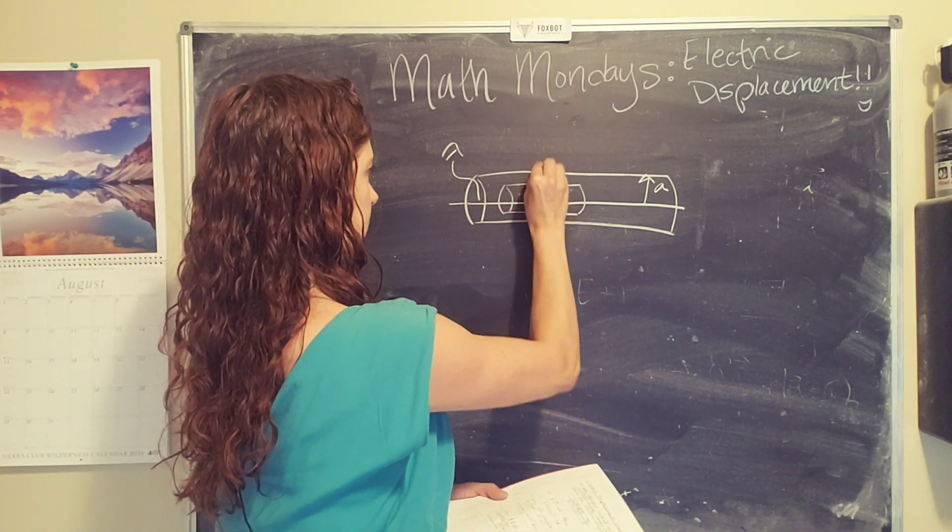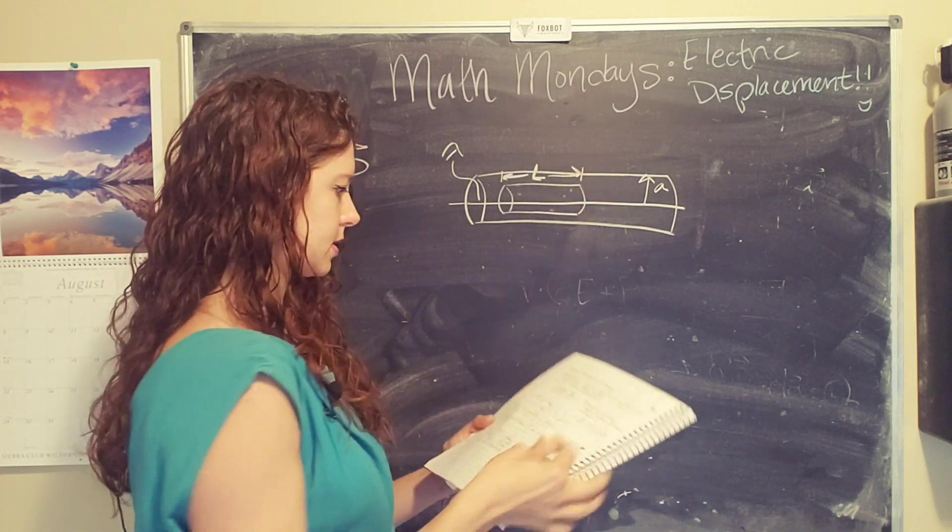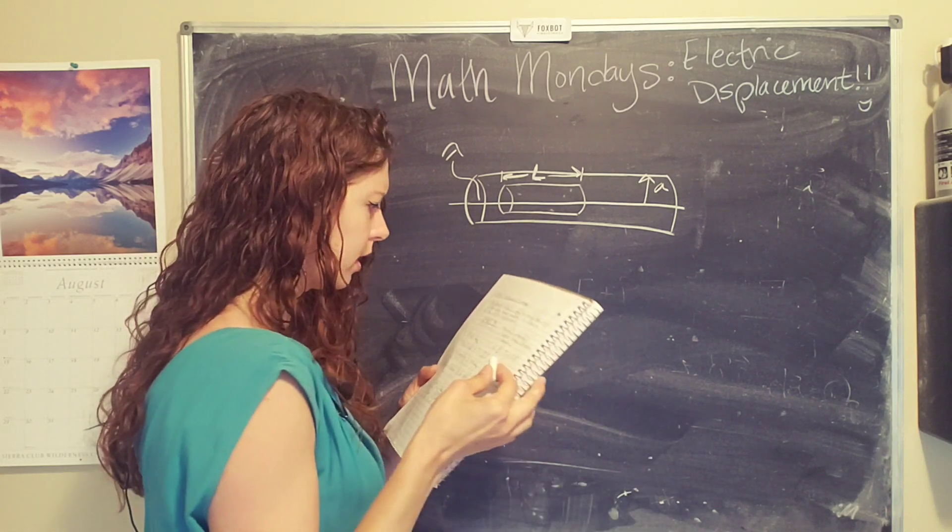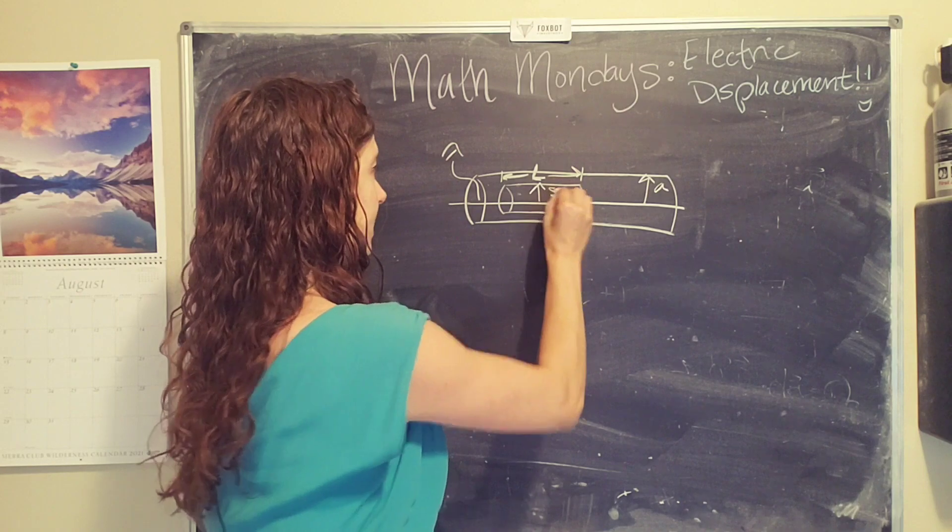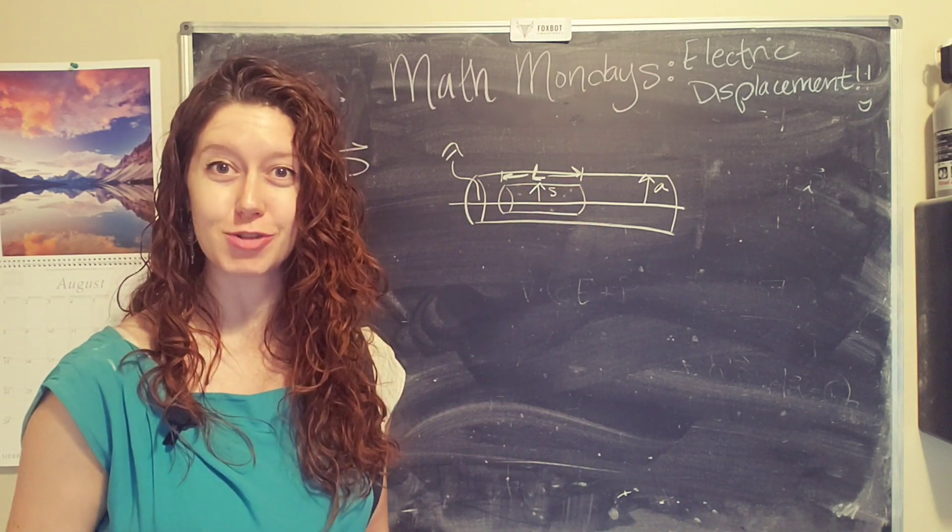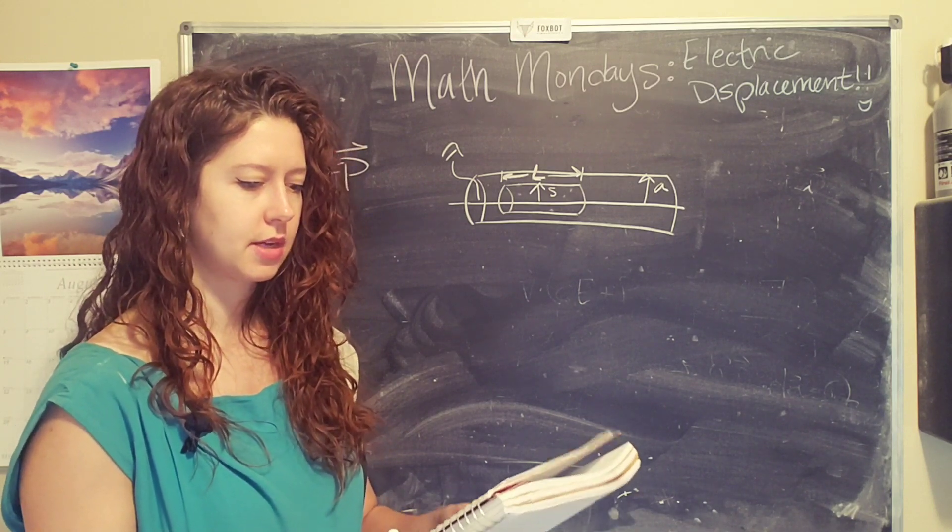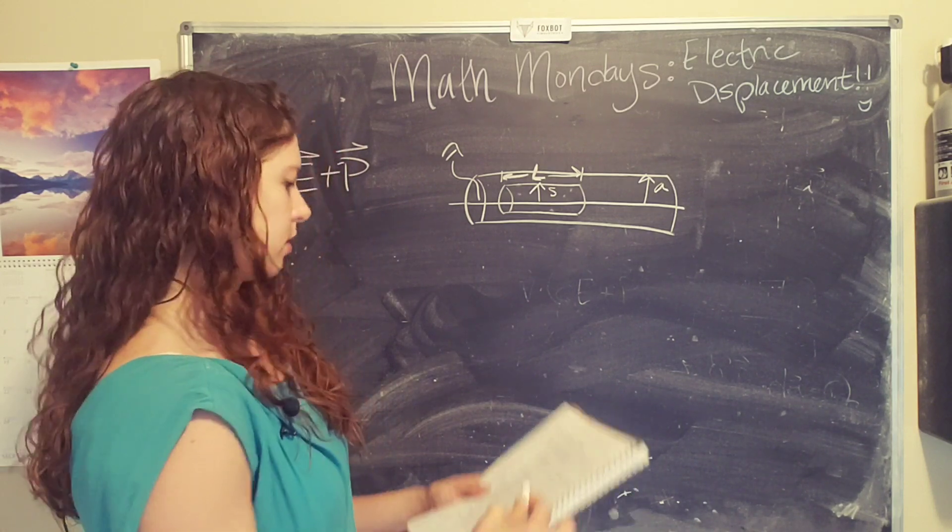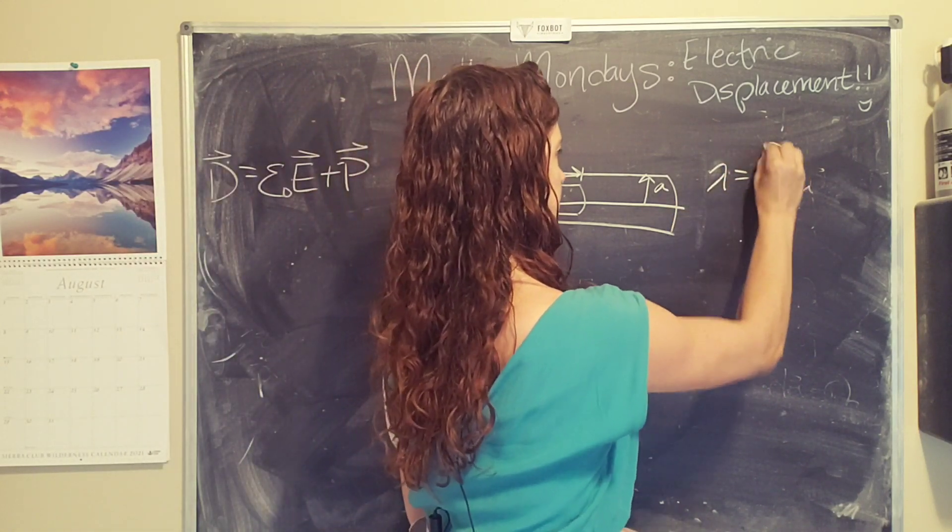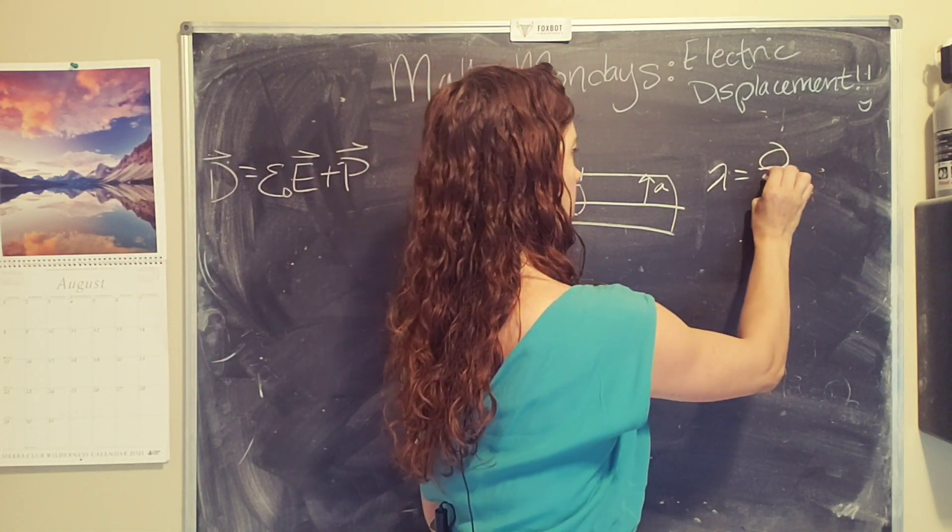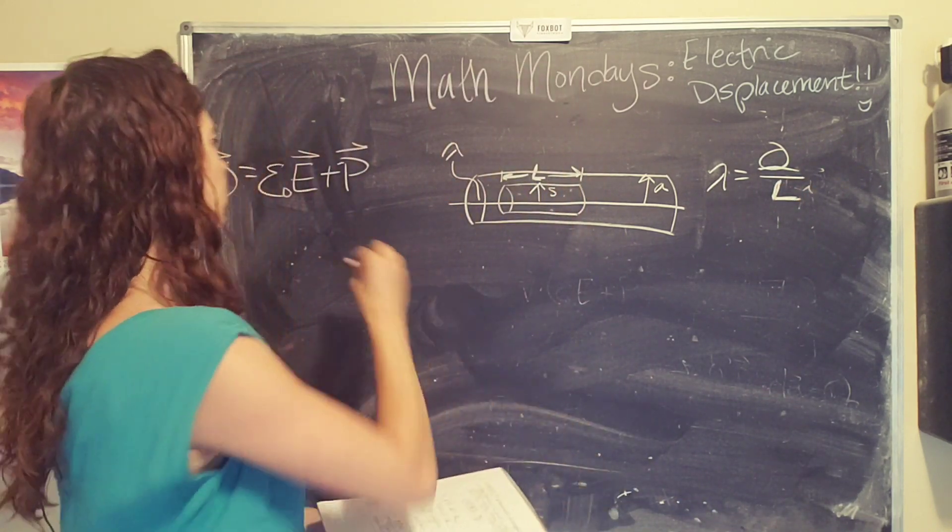And so we're gonna have a length L for our Gaussian surface. And what? Okay, this is the letter S. Couldn't read my own handwriting. Ha ha. So the radius of our Gaussian surface is S. So, okay. So the line charge density is going to equal the charge of the line divided by the length of the wire. And remember,